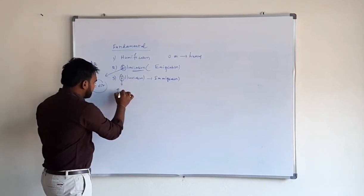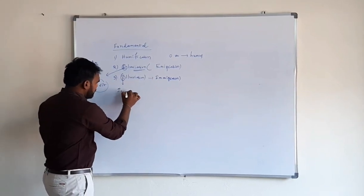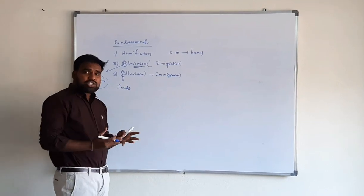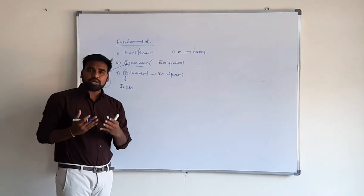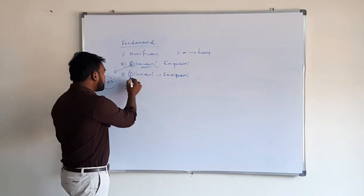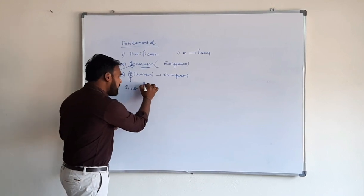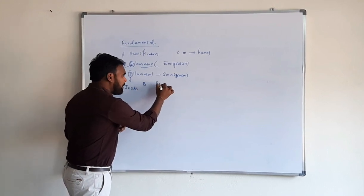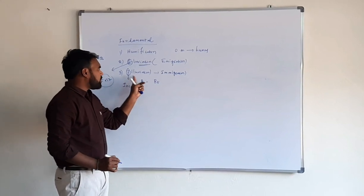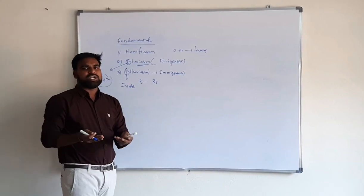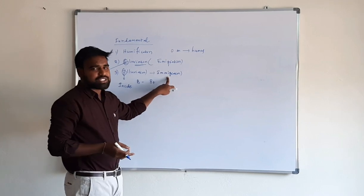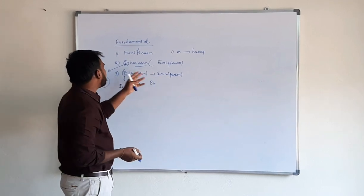Coming to illuviation: here 'I' means inside, that means accumulation or deposition of clay and iron oxides in the B-horizon, especially the Bt-horizon of the soil profile, is known as illuviation. Illuviation is also known as immigration.